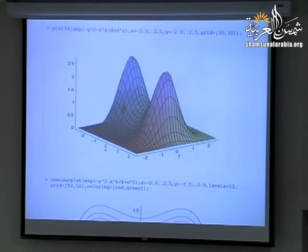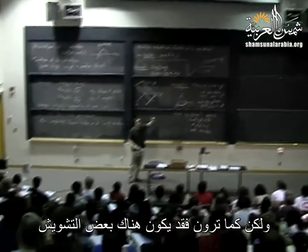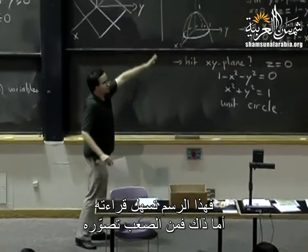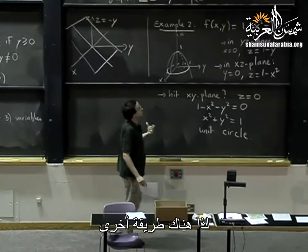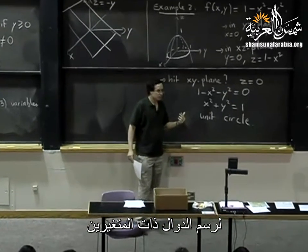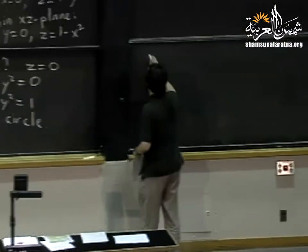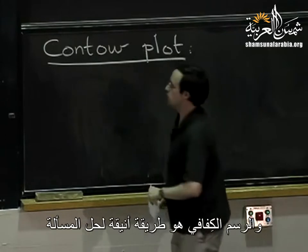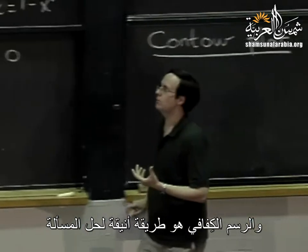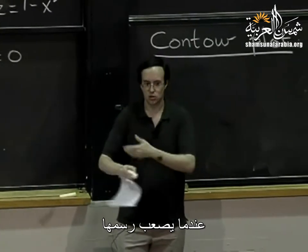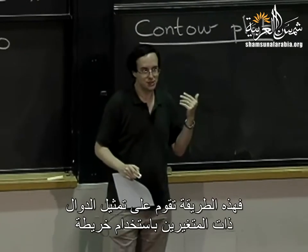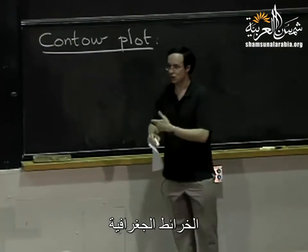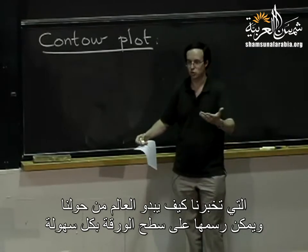That's pretty good, but you can see it can get a bit cluttered — maybe there are features hidden behind, or it's hard to see things. If we don't have a computer, it can be hard to visualize. So there's another way to plot functions of two variables, and that's called the contour plot.